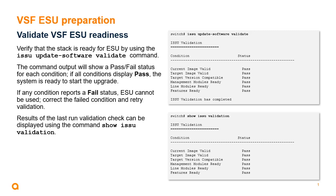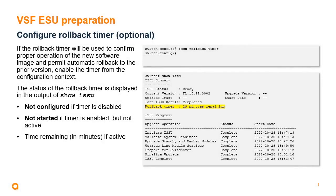The results of the last run validation check can be displayed using the show ISSU validation command. Optionally, you may enable the rollback timer to allow the system to automatically reboot to the current software version in the event of an unsuccessful upgrade that results in loss of management access. Use the ISSU rollback timer command from the switch configuration context to enable it. If the timer is disabled, 'not configured' is displayed; 'not started' is displayed if enabled but not running; and if enabled and running, the time remaining in minutes is displayed.